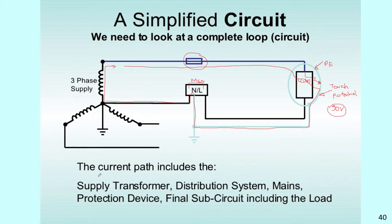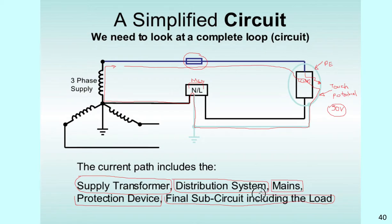Hopefully creating enough fault current. So, the current path includes the supply transformer. We've just looked at the supply transformer. The distribution system. That's the cables leading to and from the transformer. The mains. That's the coming from the supply authority to the point of attachment. Down into your protective device. And then into your final sub circuit which includes the load. So, those are the main constituent parts of the Earth fault loop itself.